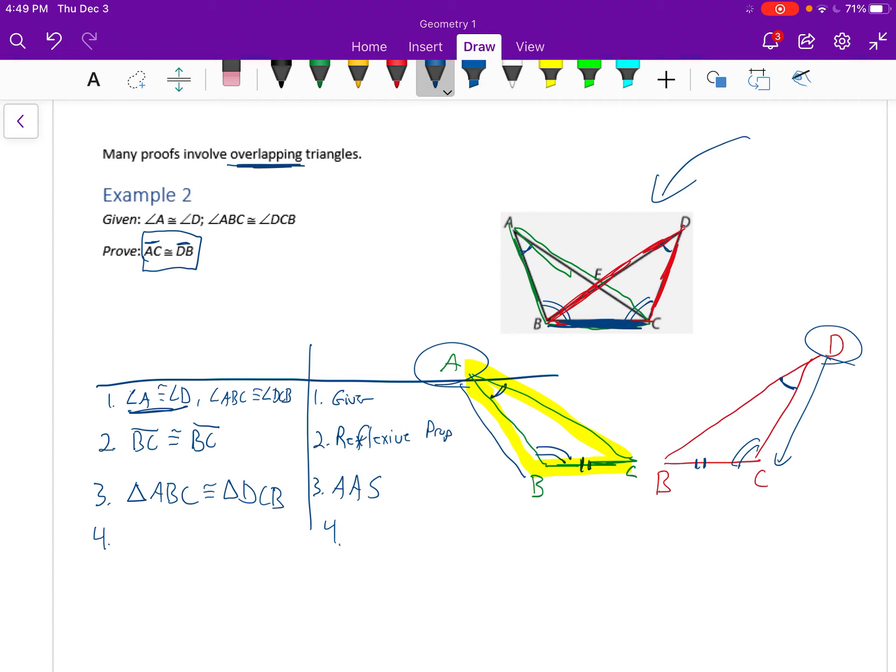And then we're able to finish this up. Since the two triangles are congruent, we know that all corresponding parts are congruent, which does include AC, that's this one here, congruent to DB. And so we can say AC is congruent to DB. And that's the definition of congruent triangles. But we normally just write CPCTC, which stands for corresponding parts of congruent triangles are congruent.